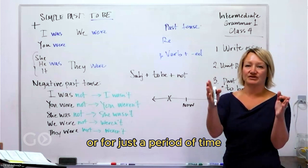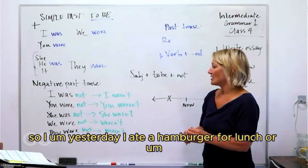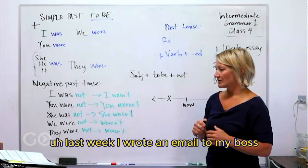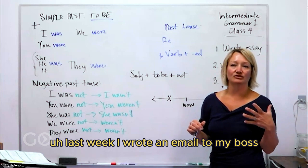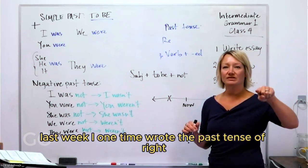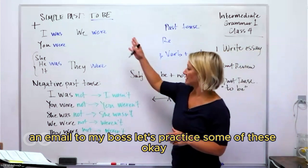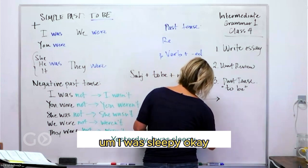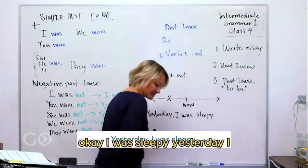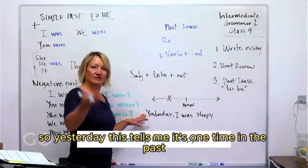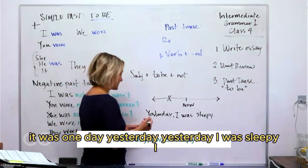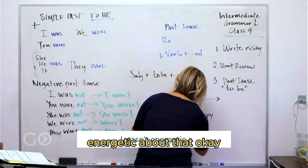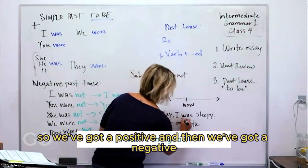Something that happened one time or for just a period of time but now is done. So, yesterday I ate a hamburger for lunch, or last week I wrote an email to my boss. Last week I, one time, wrote the past tense of 'write', an email to my boss. Let's practice some of these. This is an easy one: yesterday I was sleepy. Yesterday, this tells me it's one time in the past, it was one day, yesterday I was sleepy. I wasn't energetic, how about that? So we've got a positive and then we've got a negative.